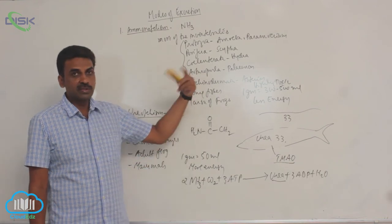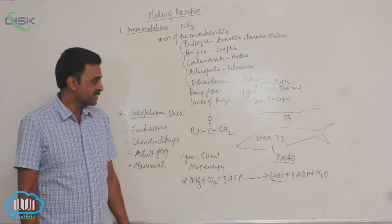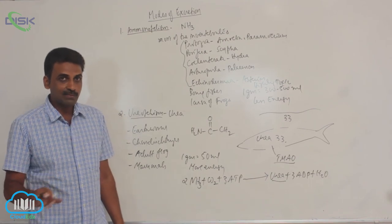All these animals excrete urea as the excretory product. It is less toxic and requires less water, but it spends some energy in the process.